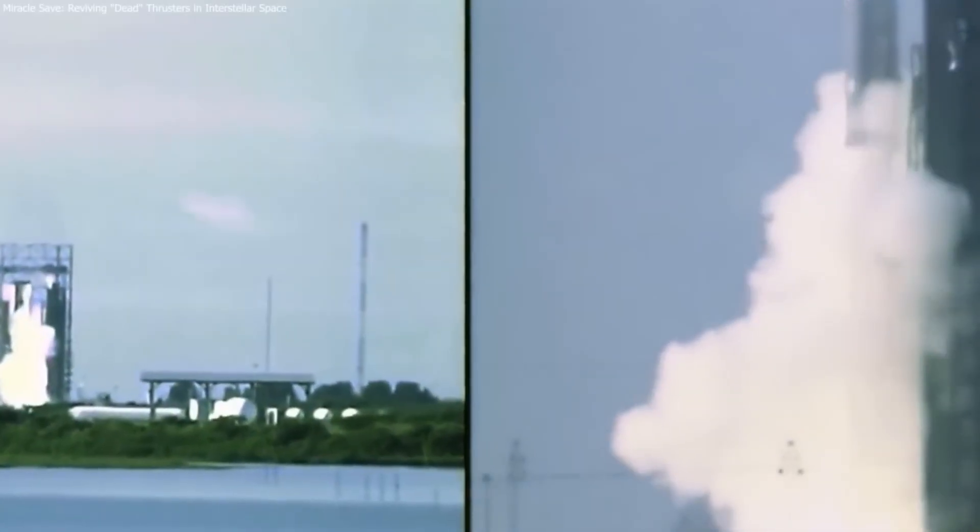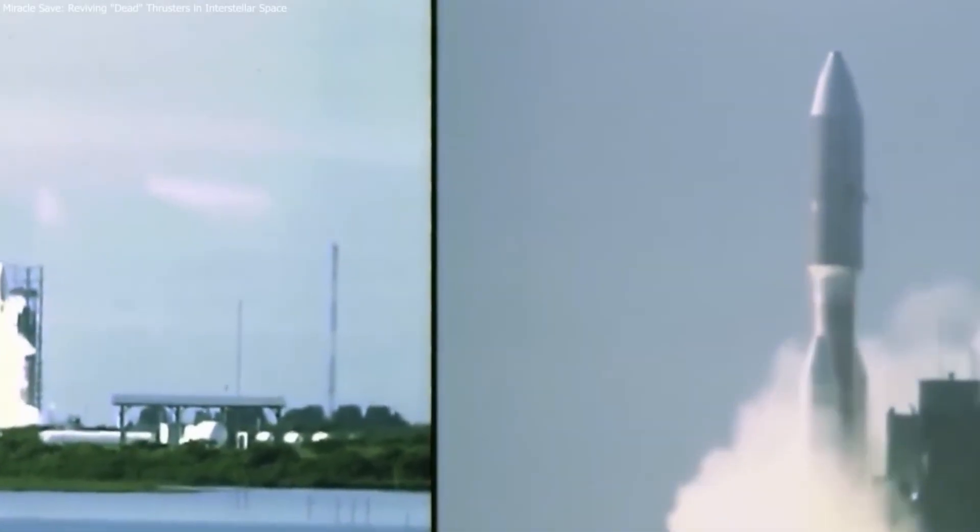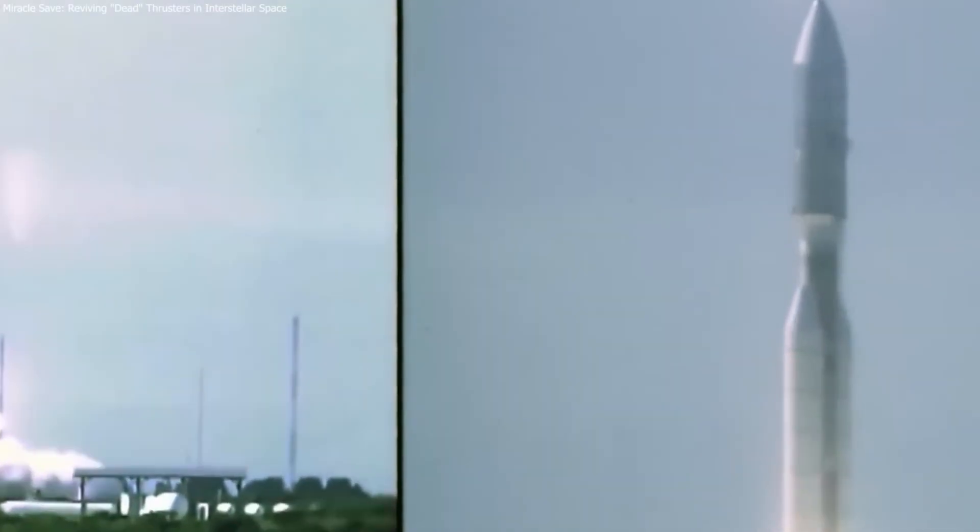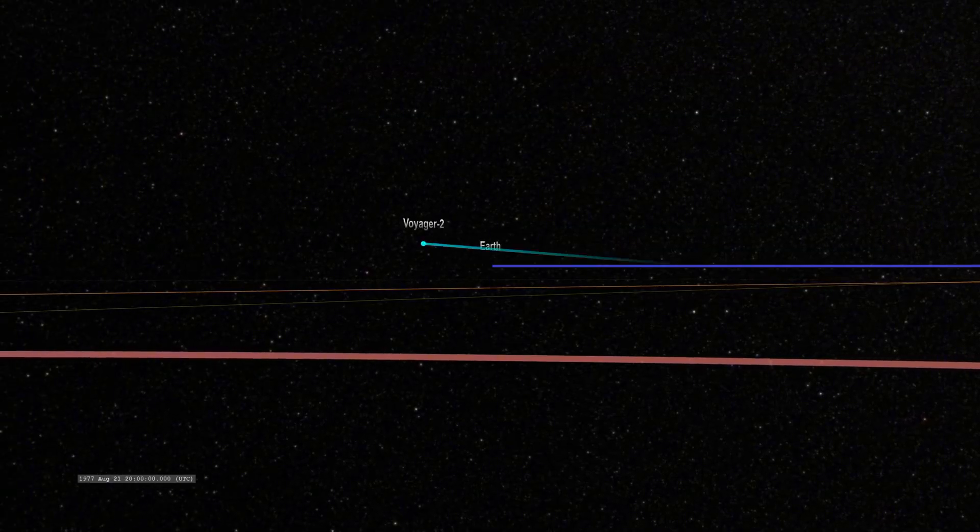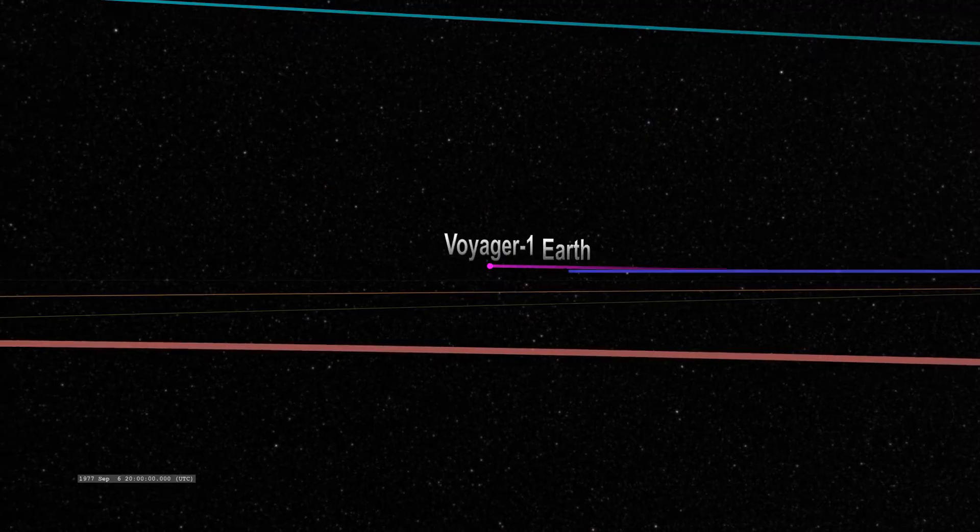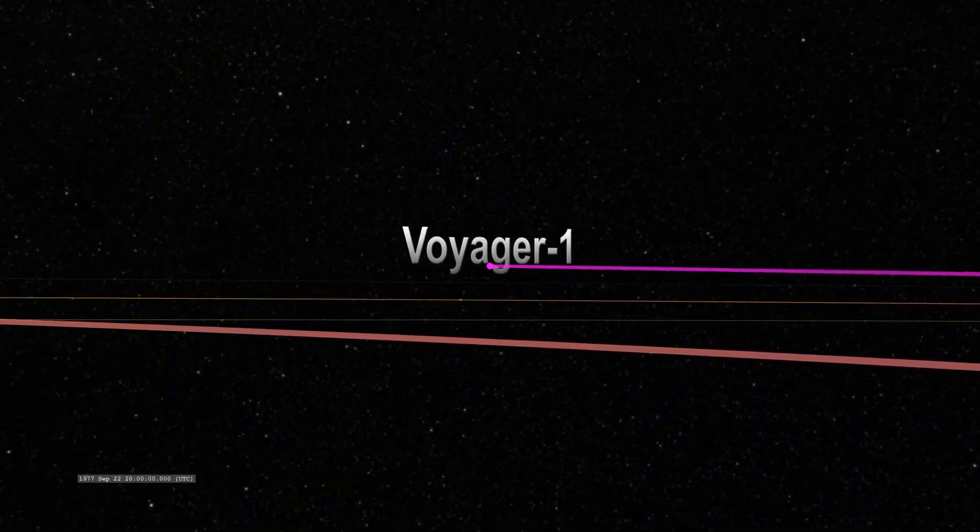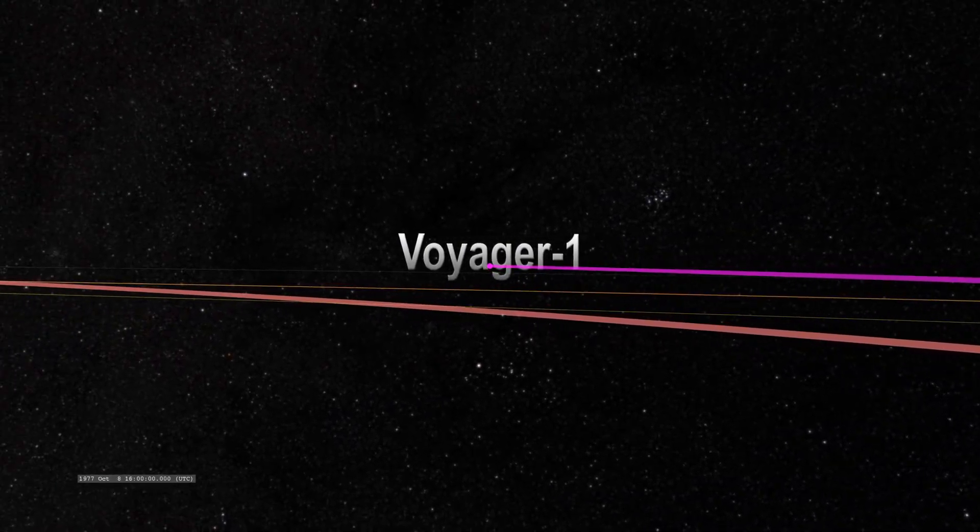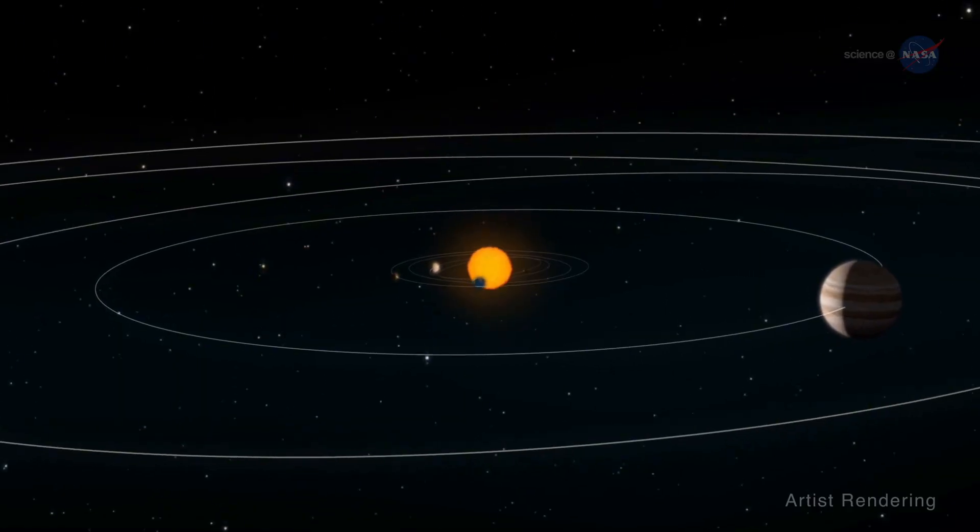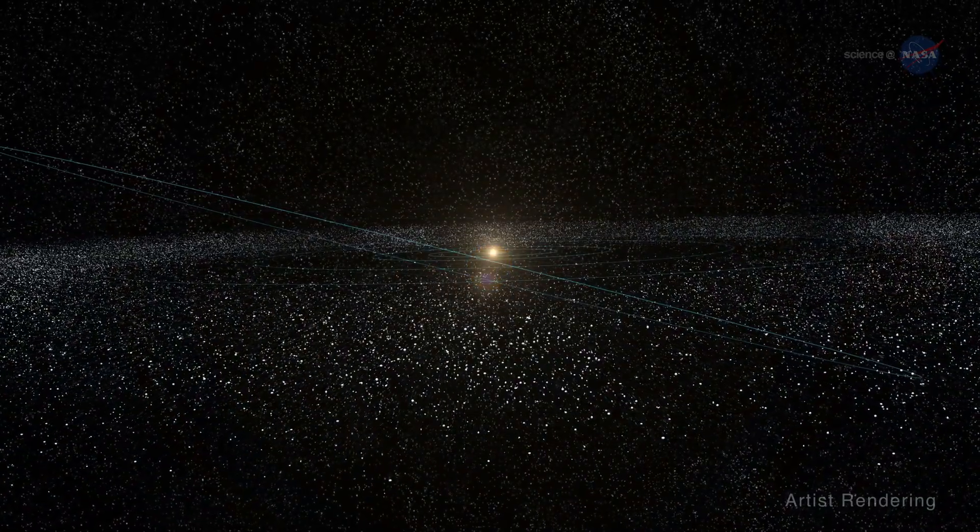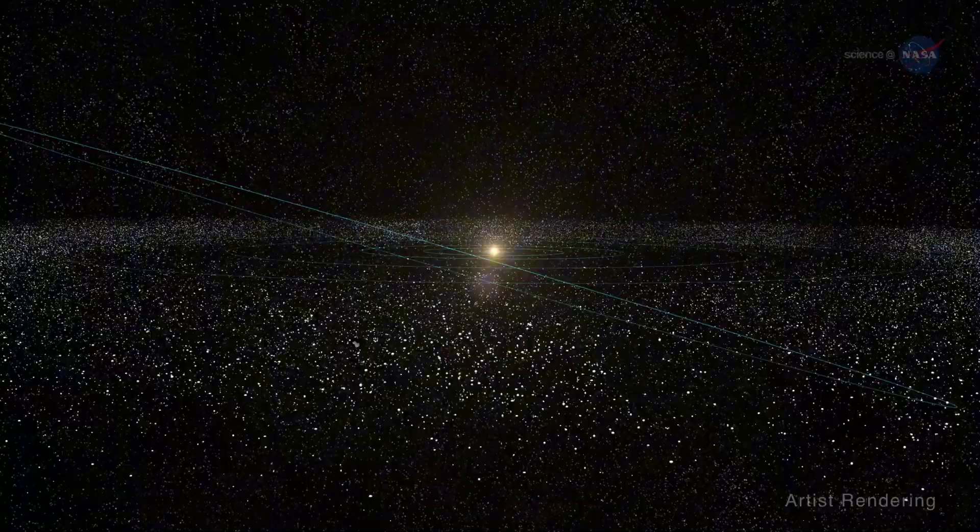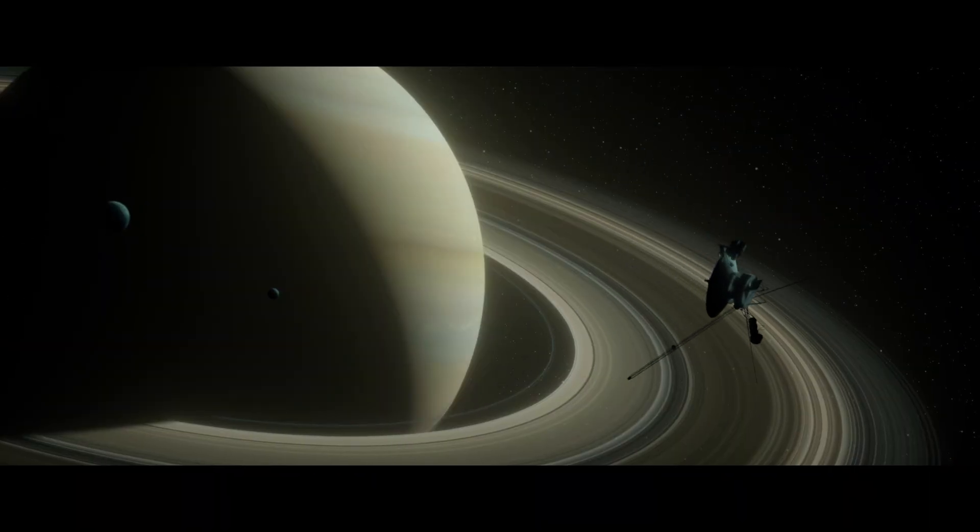It all began on September 5, 1977. Launched just a few weeks after its twin, Voyager 2, Voyager 1's mission was to see up close the planets we had known for centuries only as points of light. The timing was perfect. The giant planets of the solar system, Jupiter and Saturn, were in a rare alignment.